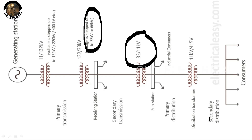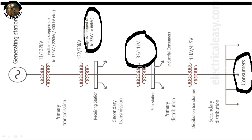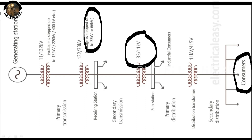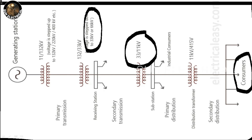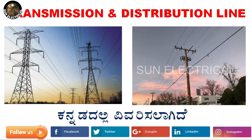At the secondary distribution substation, the power reaches the consumer. So friends, the consumer receives the power at the end of this layout.